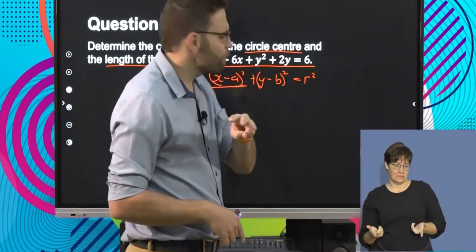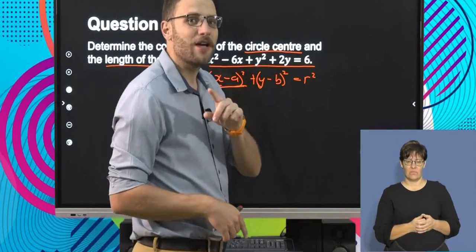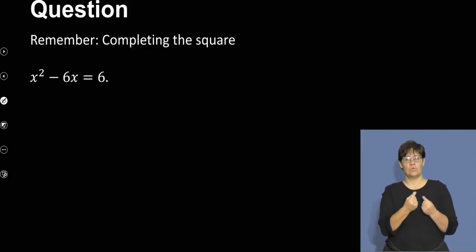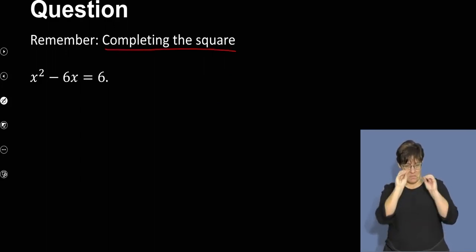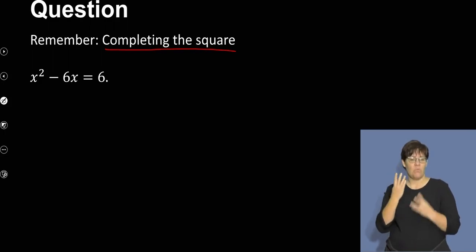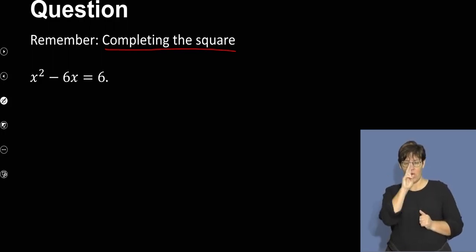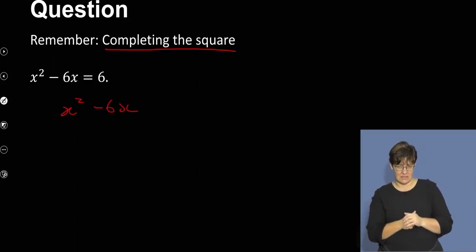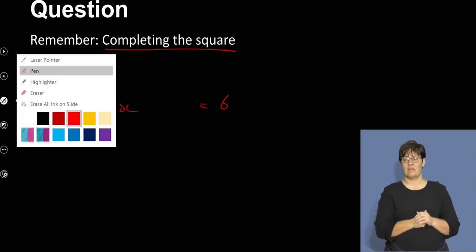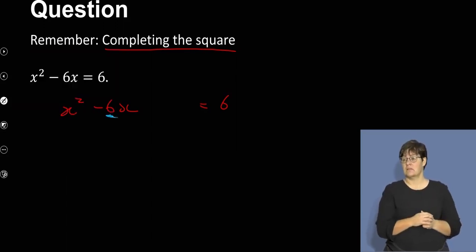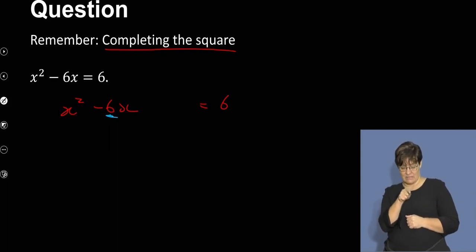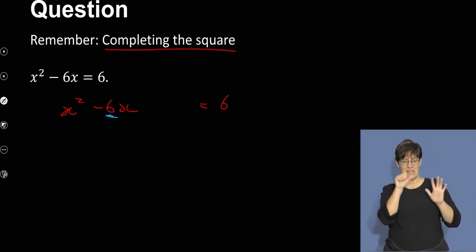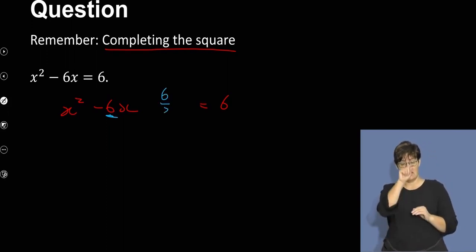What I want to remind you of is a section we've done in maths called completing the square. This was a way we used to solve equations. If I look at this equation x squared minus 6x minus 6, what we did was take the coefficient of x — which is 6 in this case — divide it by 2, and square it.